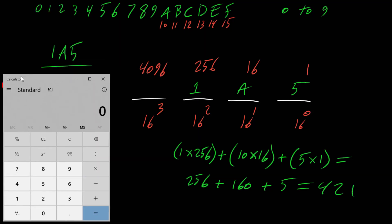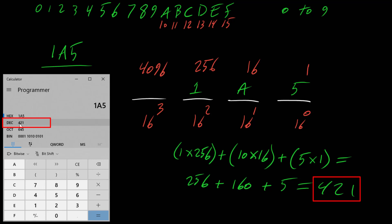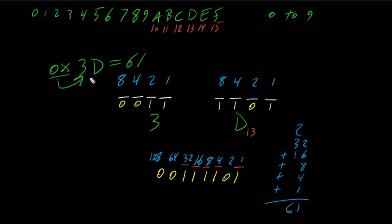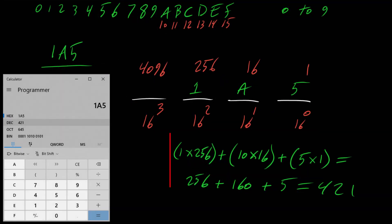Let's verify using a calculator. Switching to programmer view and selecting hex, we enter 1A5. We can see that 1A5 hexadecimal is equivalent to 421 decimal, confirming our answer. This was an example of converting hexadecimal directly to decimal using place values — another way of converting hexadecimal to decimal. We can use binary as a bridge (first converting hex to binary, then to decimal) or directly use place values.